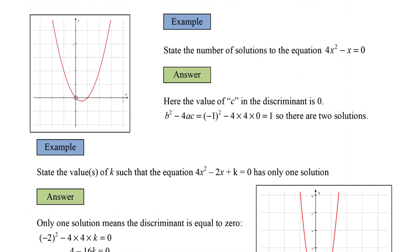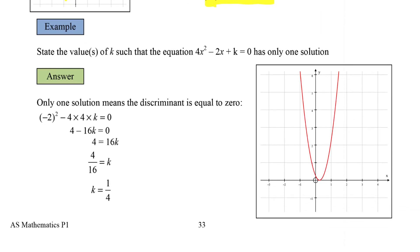Another example: state the number of solutions for 4x squared minus x equals zero. Here a is 4, b is negative 1, and c is equal to 0 — no constant term. Substituting into the discriminant gives us 1. The discriminant is greater than 0, so we've got two solutions, and there are two values where that graph goes through the x-axis.